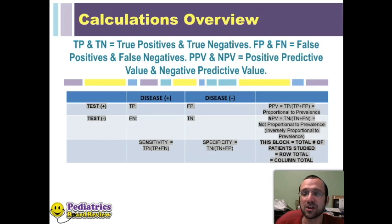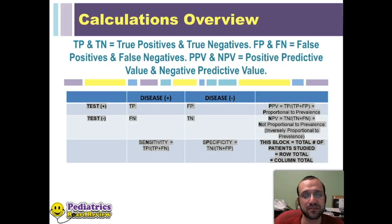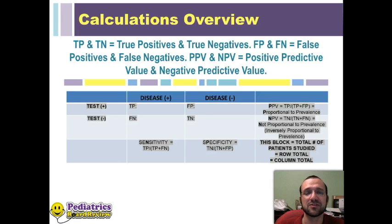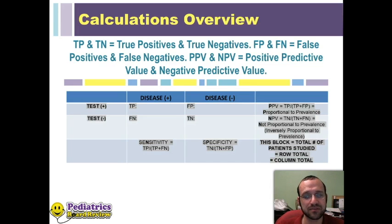For specificity, you need only column three — your false positives and your true negatives. For positive predictive value, you need only your test positives — your true positives and false positives. For negative predictive value, you need only your negative testers — false negatives and true negatives.